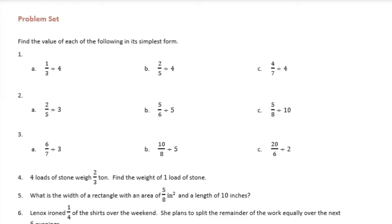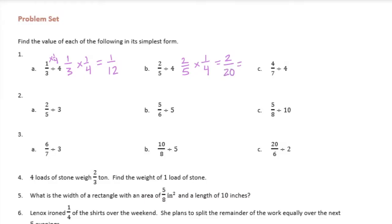Number one. We're going to turn these into multiplication problems to make them simpler to solve. One-third divided by one-fourth — remember, divided by four means the same as times one-fourth — so we would get one-twelfth. Two-fifths divided by four, or times one-fourth, is two-twentieths, and you can reduce that to one-tenth.